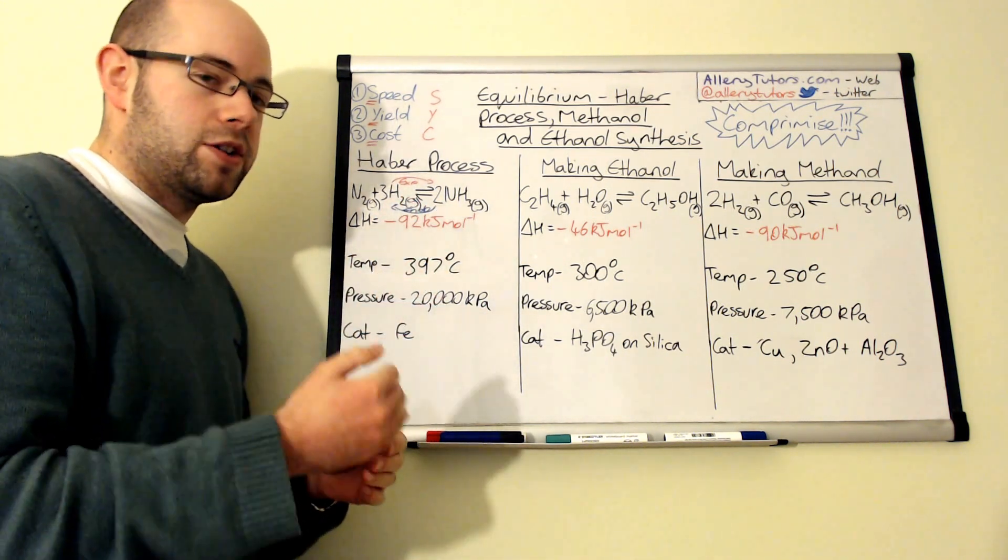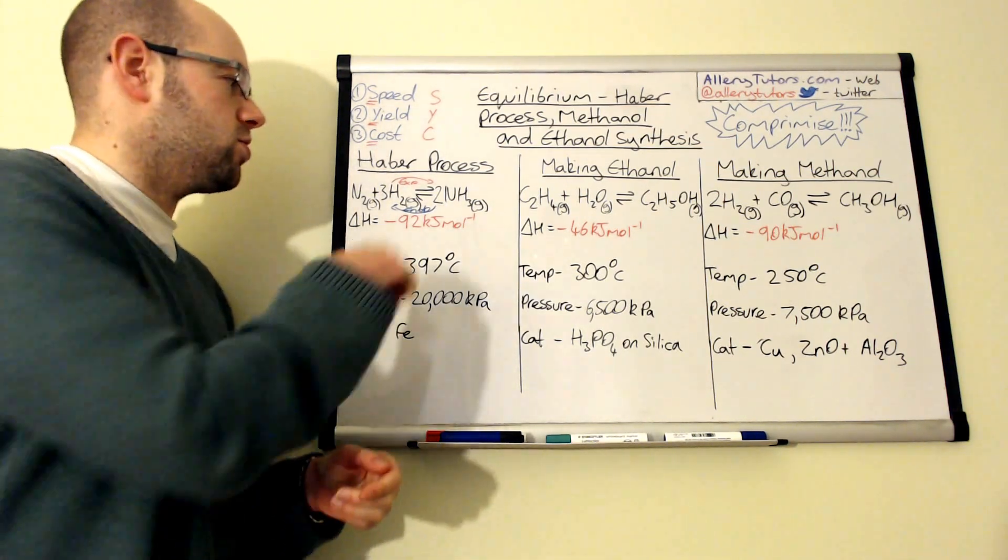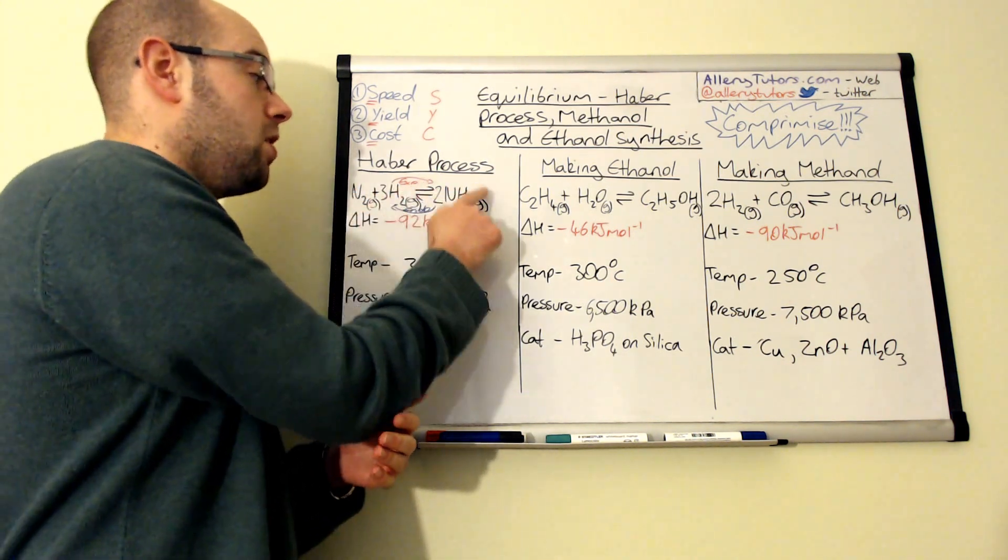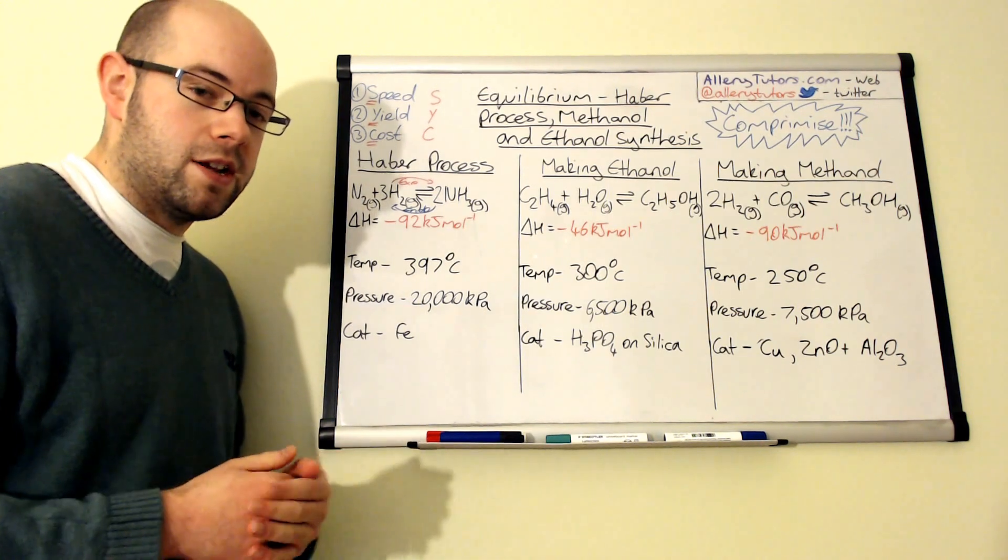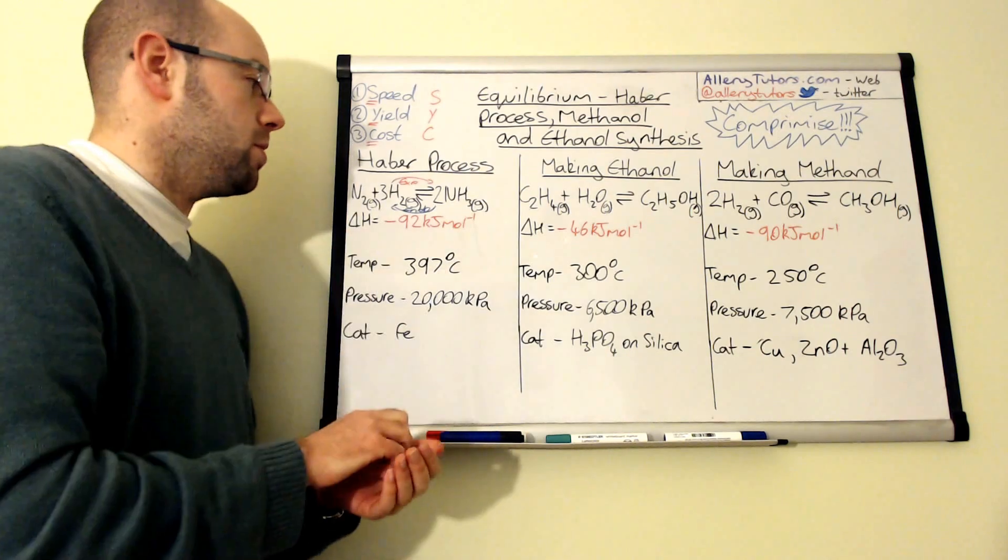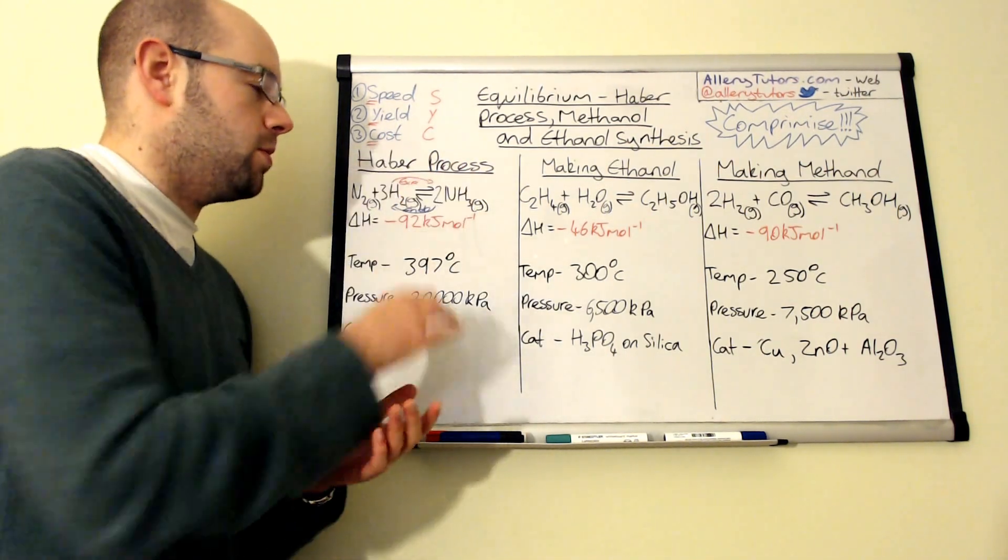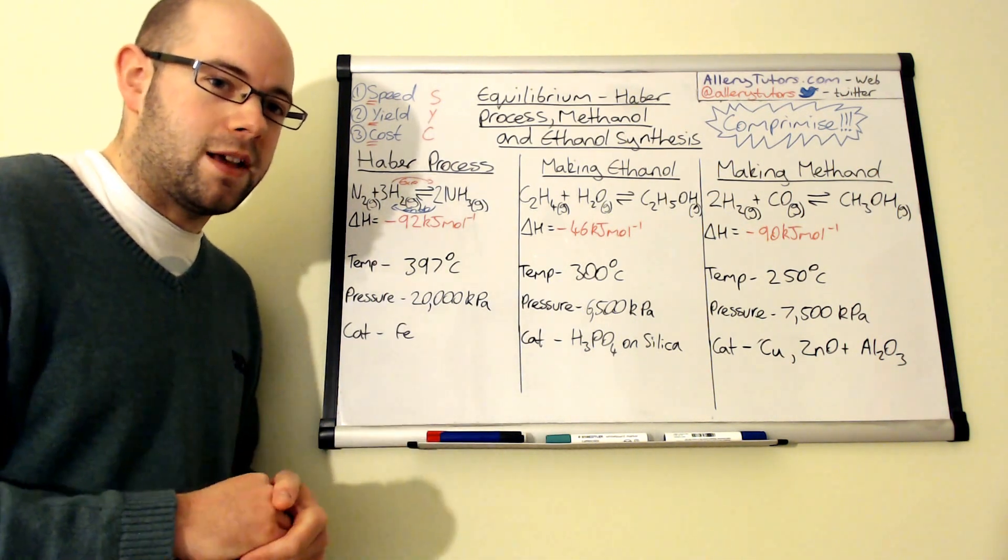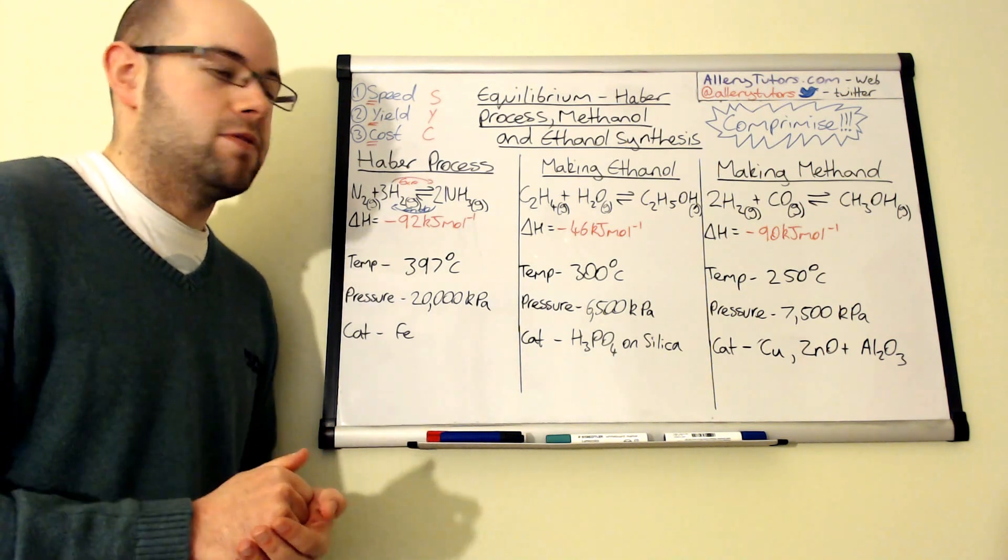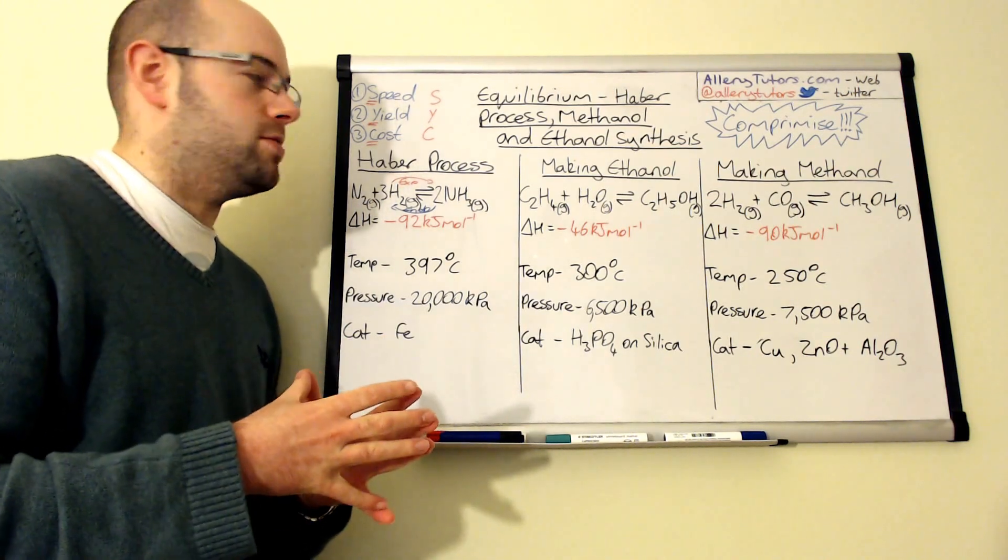You want to produce this as quickly as possible but you want to produce as much of it as you can. But we can't have that because if we increase the temperature, Le Chatelier's principle says that the reaction will shift to oppose that change in the endothermic direction, which is on the left hand side. That means our yield of ammonia will decrease. But if we cool the temperature down, we'll produce lots of ammonia but it will take ages to make because the rate slows down.